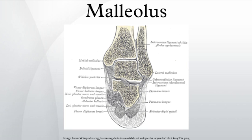The anterior border is rough, for the attachment of the anterior fibers of the deltoid ligament of the ankle joint. The posterior border presents a broad groove — the malleolar sulcus — directed obliquely downward and medially, and occasionally double. This sulcus lodges the tendons of the tibialis posterior and flexor digitorum longus. The summit of the medial malleolus is marked by a rough depression behind, for the attachment of the deltoid ligament.